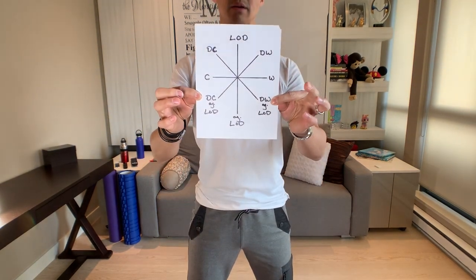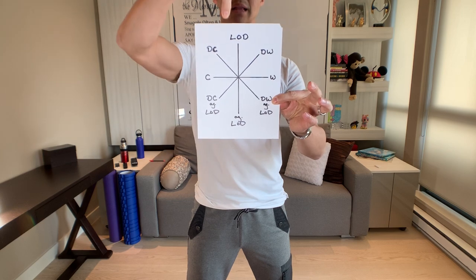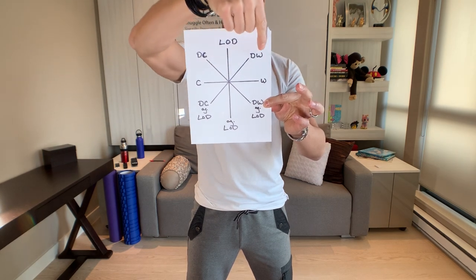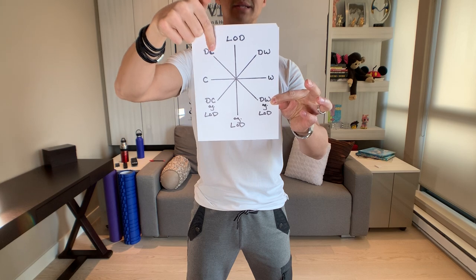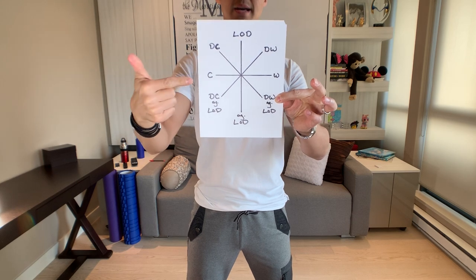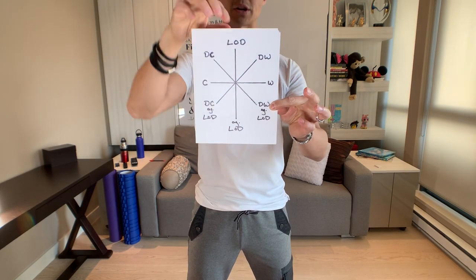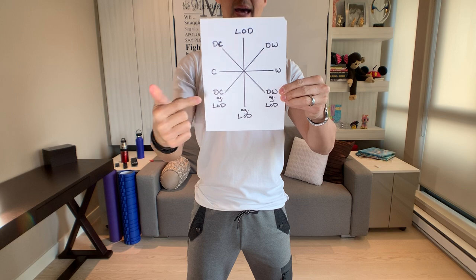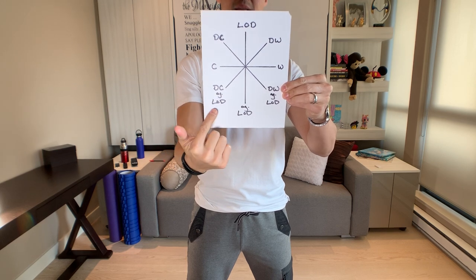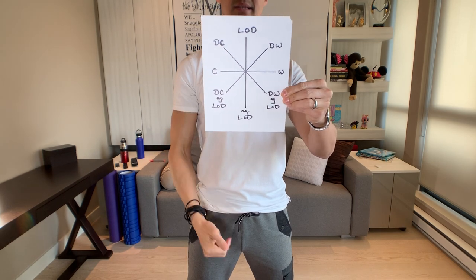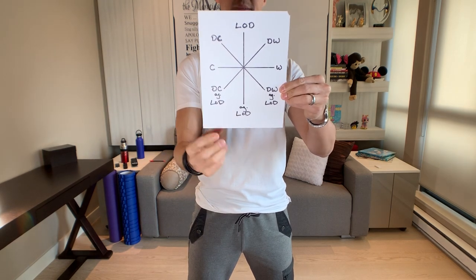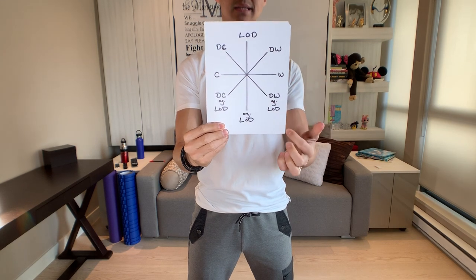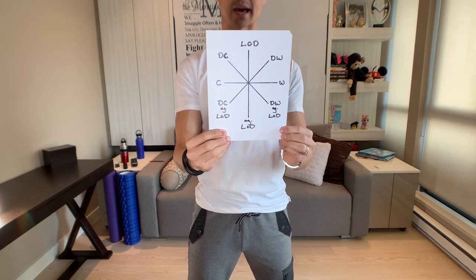There it is again. We have line of dance, diagonal wall, diagonal center, center, wall, diagonal center against the line of dance, against the line of dance, and diagonal wall against the line of dance.